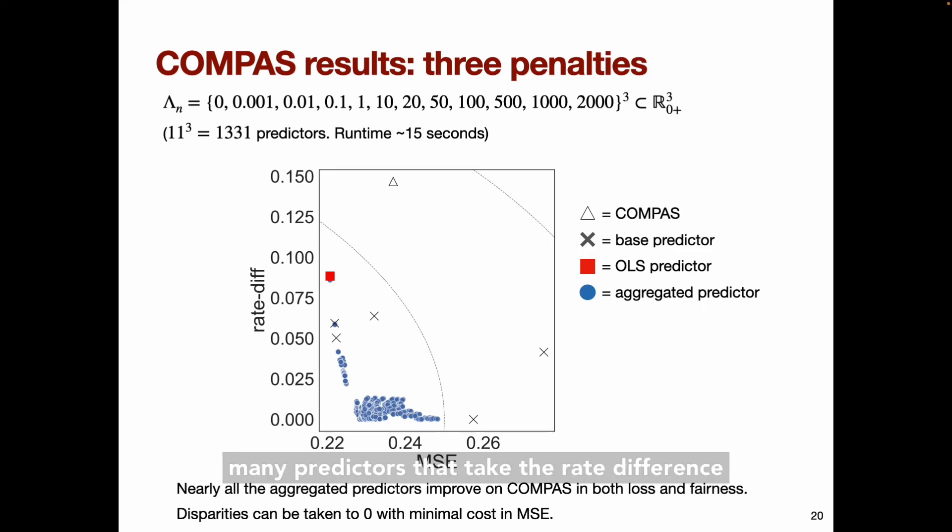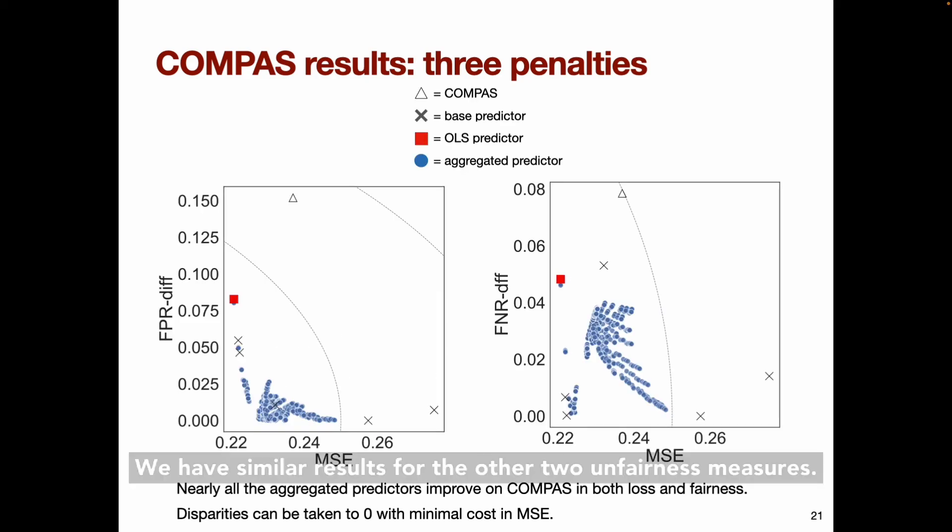Notably, there are many predictors that take the rate difference essentially to zero, with very little cost of mean squared error relative to the OLS predictor. We have similar results for the other two unfairness measures. Once again, we can take both these measures essentially to zero, with very small increase in mean squared error relative to the least squares predictor.